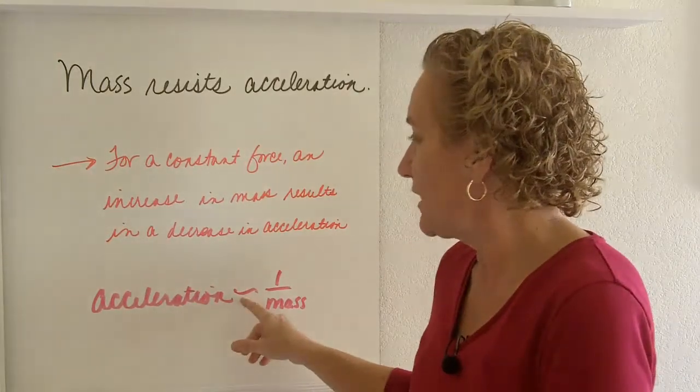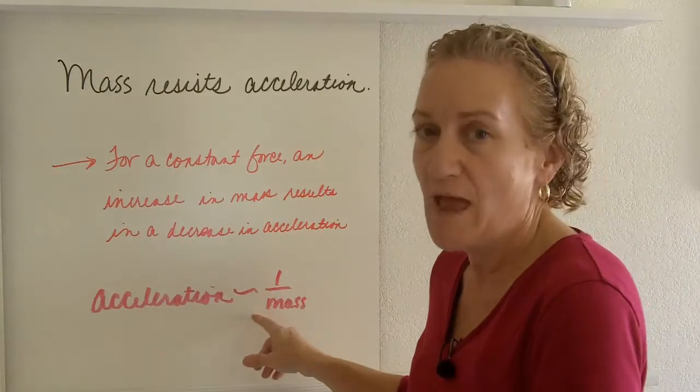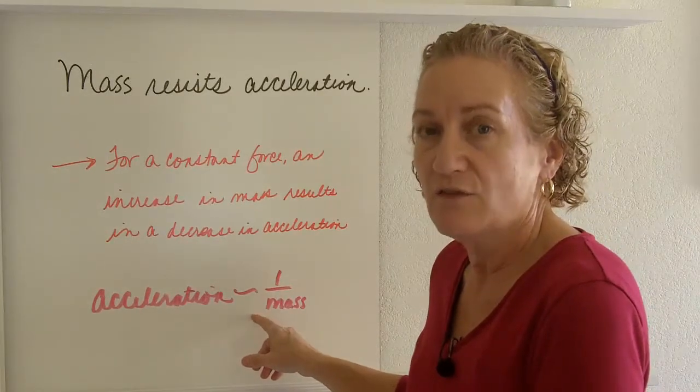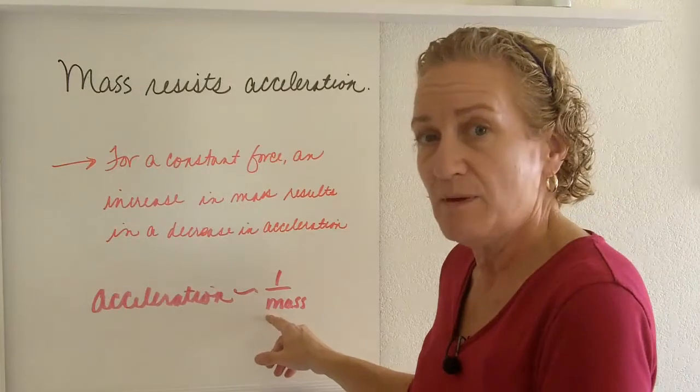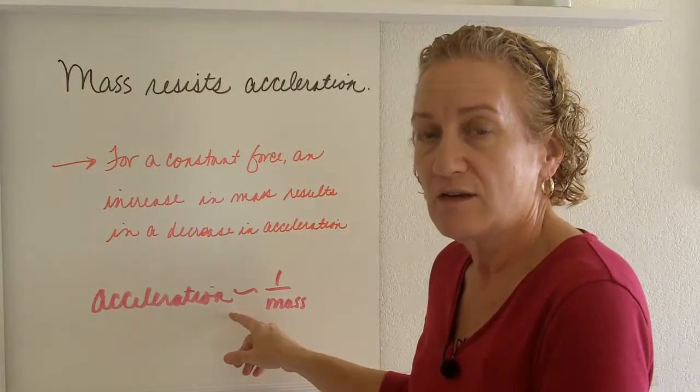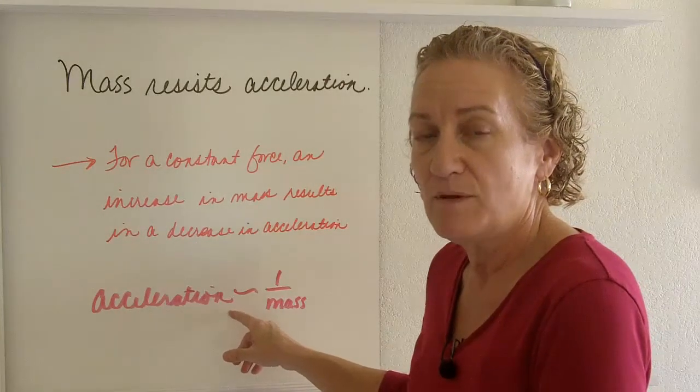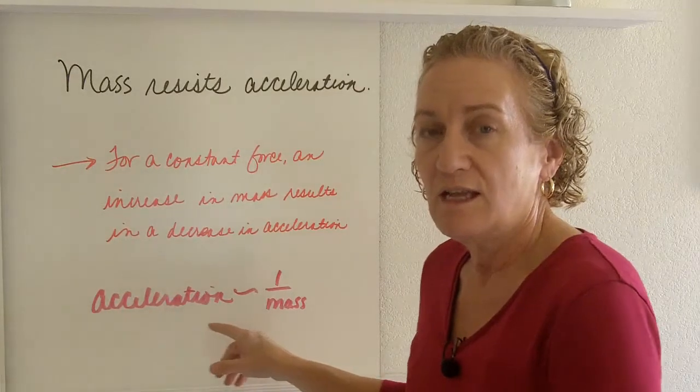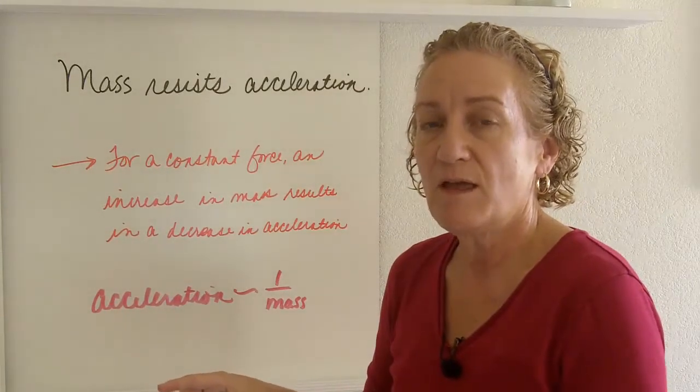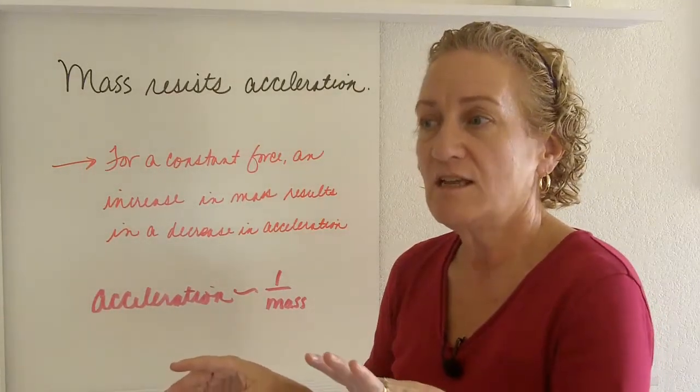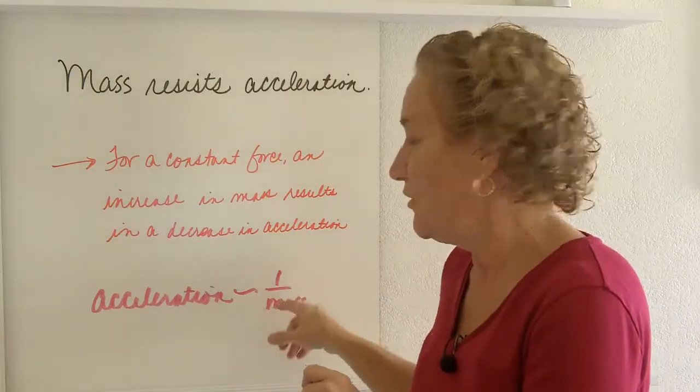So acceleration is directly proportional to one over mass, or inversely proportional to mass. As mass goes up, acceleration goes down. As acceleration goes up, mass goes down. It's an inverse relationship. Acceleration is directly proportional to one over mass.